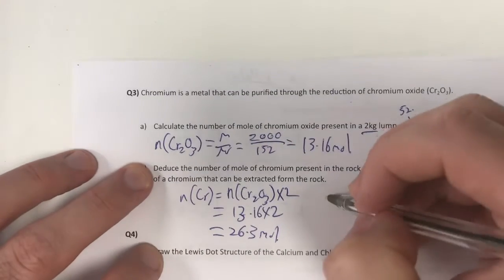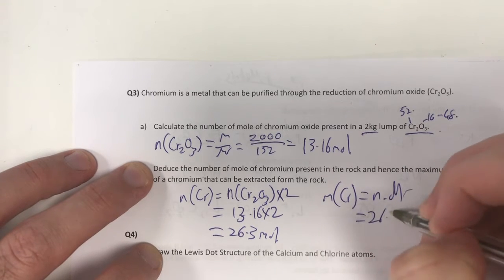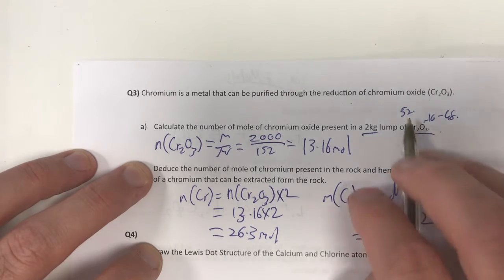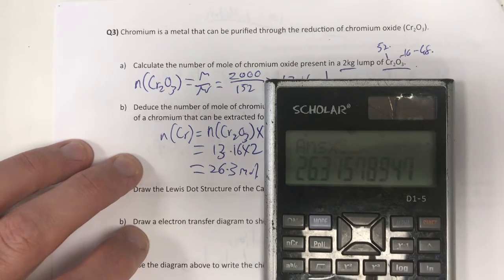And then my mass of chromium is going to be equal to my number of moles times molar mass, which is 26.3 times by 52. So remember my molar mass of chromium comes from beforehand. So I take that number again, take the answer times by 52.